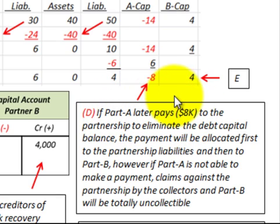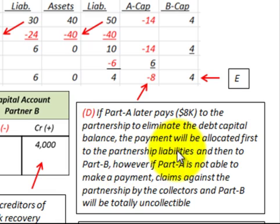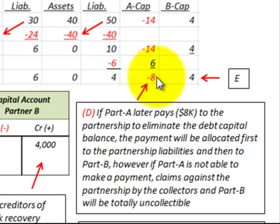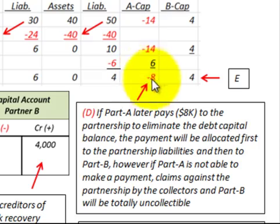If Partner A later pays this $8,000, the partnership will eliminate the debit capital balance. That payment would be allocated first to the partnership liabilities of $4,000, and then to Partner B. However, if Partner A cannot make the payment, the claims against the partnership by creditors and Partner B will be totally uncollectible. Everything depends on how much Partner A can pay off on their capital account.